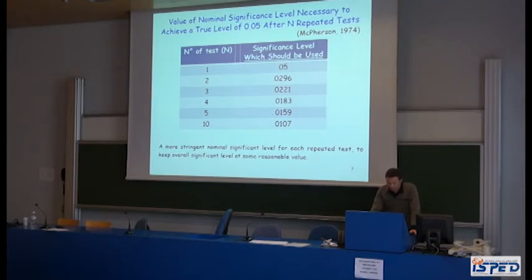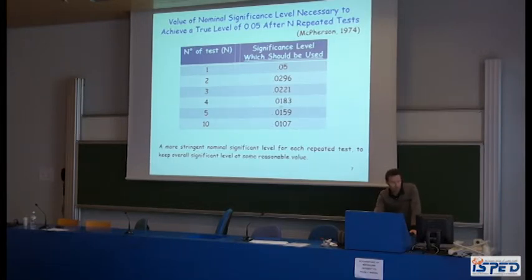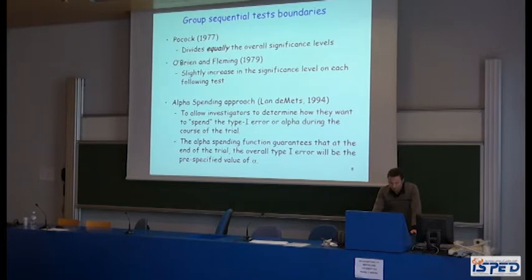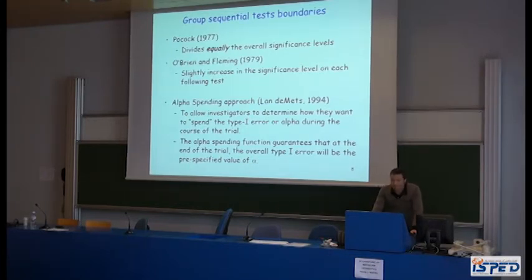The solution is to use a more stringent nominal significance level for each interim test, to achieve an overall nominal level of 5%. In the case of 5 analyses, the nominal level for each analysis is fixed at 0.0159. The boundaries proposed by Pocock depend only on the type 1 error and the total number of analyses, using the same critical value at each planned analysis. The O'Brien-Fleming procedure spends little type 1 error during the first interim analyses and gradually increases it, so the final p-value is close to the nominal level.